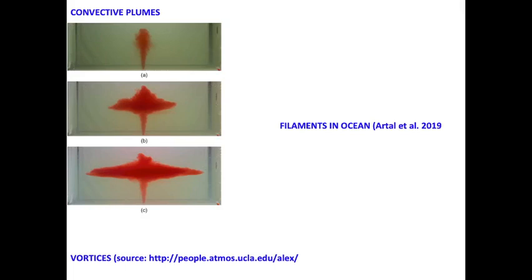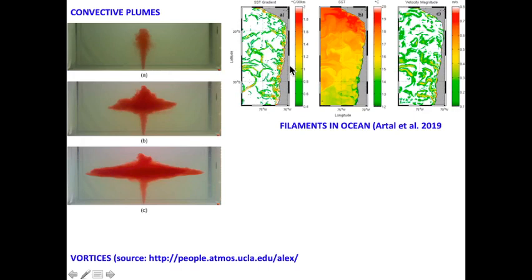Submesoscale processes are not being resolved by models, and they play a very, very vital role. Examples include small vortices, convective plumes, or filaments that we see in ocean and atmosphere. As a convective plume rises, it mixes with the ambient and intrudes into it. These filaments seen in ocean maps cause a lot of mixing and affect the sea surface temperature, and if the sea surface temperature is affected, then the coupling between ocean and atmosphere is also affected.